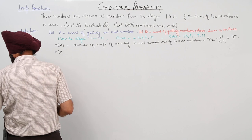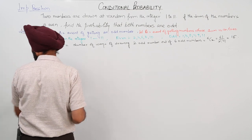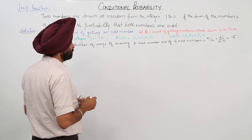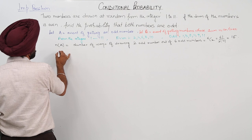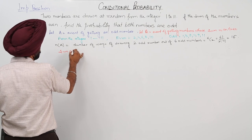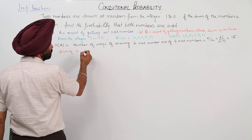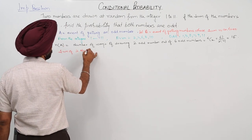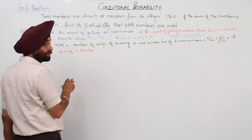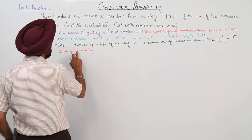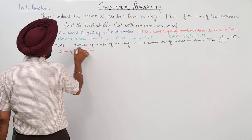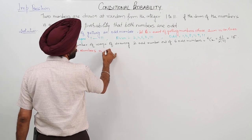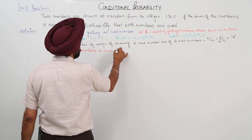Before n(B) let me write once again whatever I just spoke in the beginning. Sum of 2 numbers is even if either...